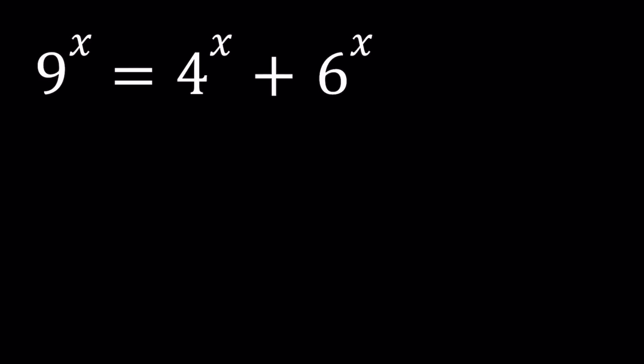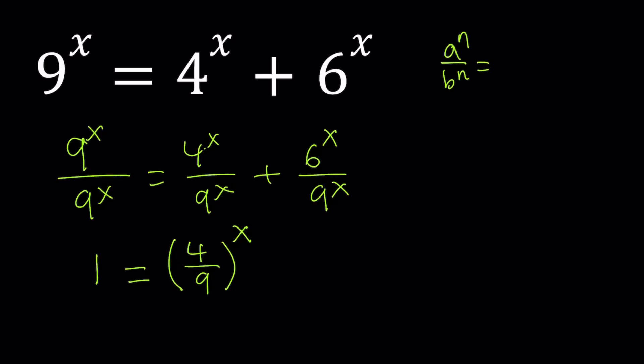Since 9 to the power x has the largest base, I'm going to divide everything by 9 to the power x. 9 to the power x divided by itself is 1. 4 to the power x divided by 9 to the power x can be written as 4 over 9 to the power x by using properties of exponents. When you have a to the n divided by b to the n, you can write it as a over b to the power n. We'll use the same property and write this as 6 over 9 to the power x.